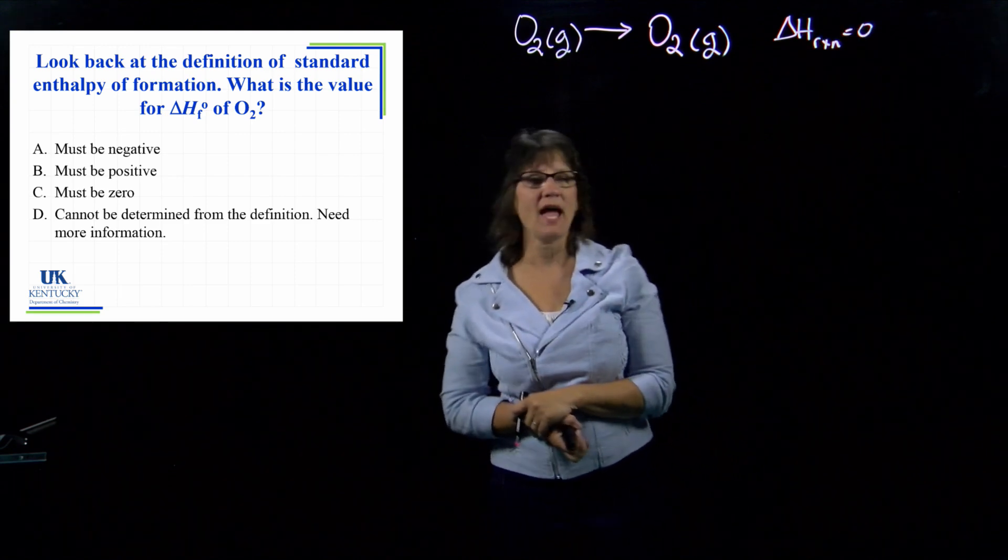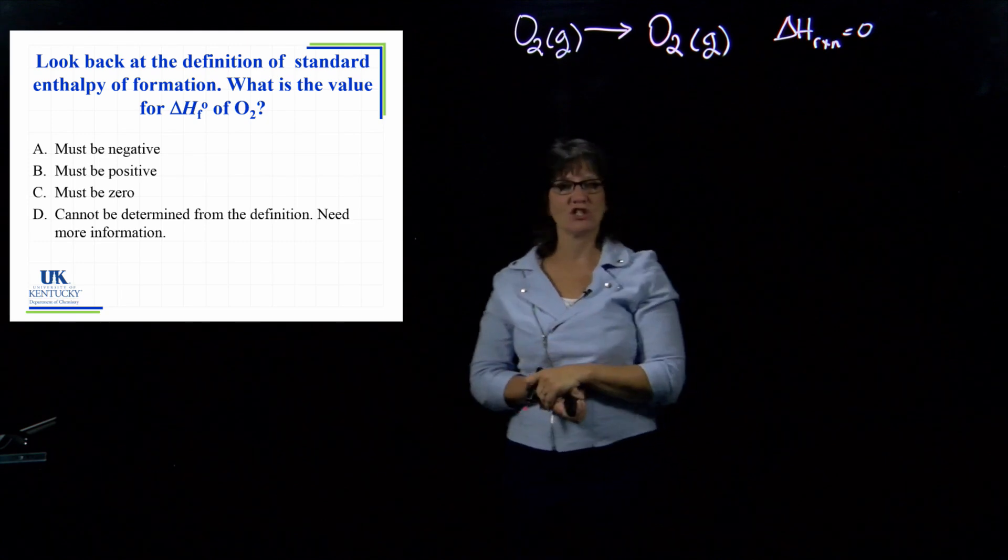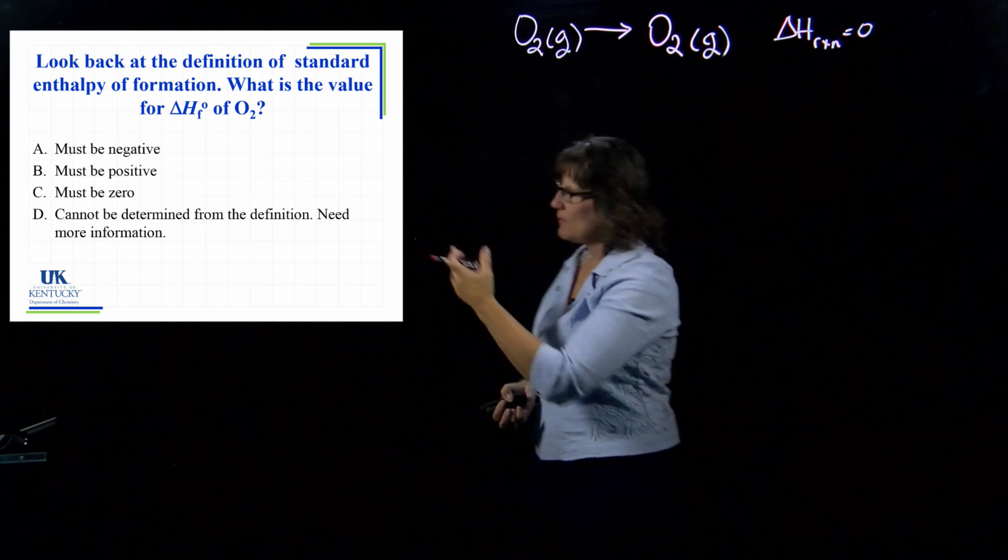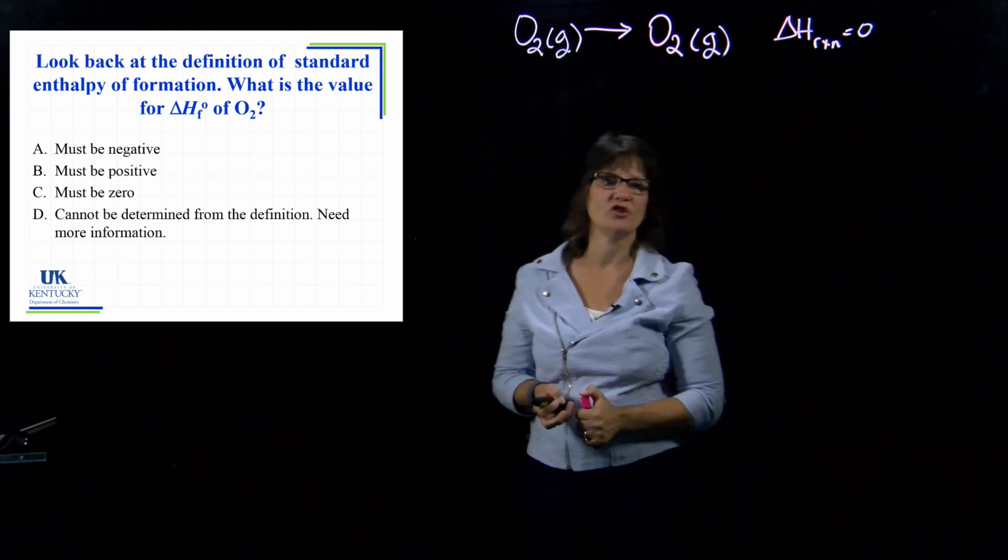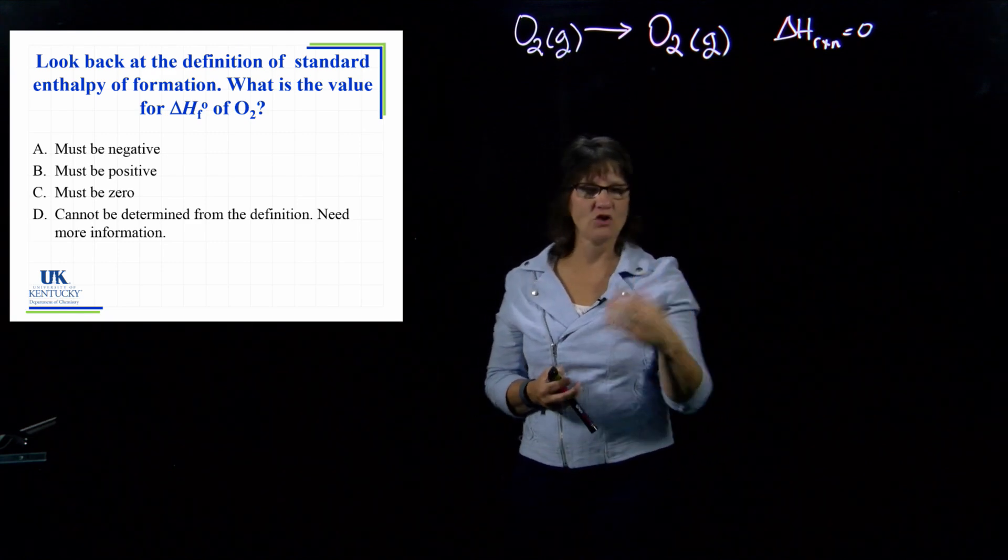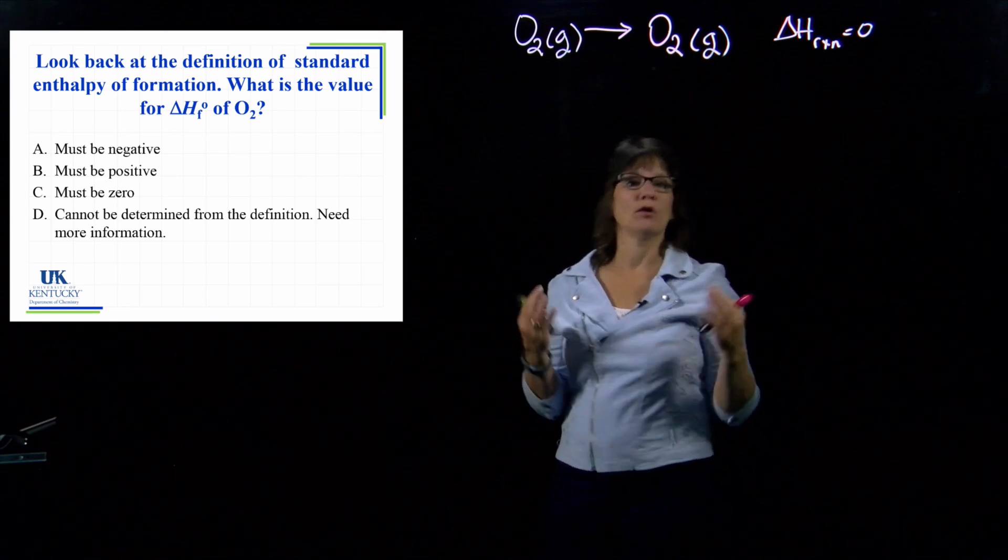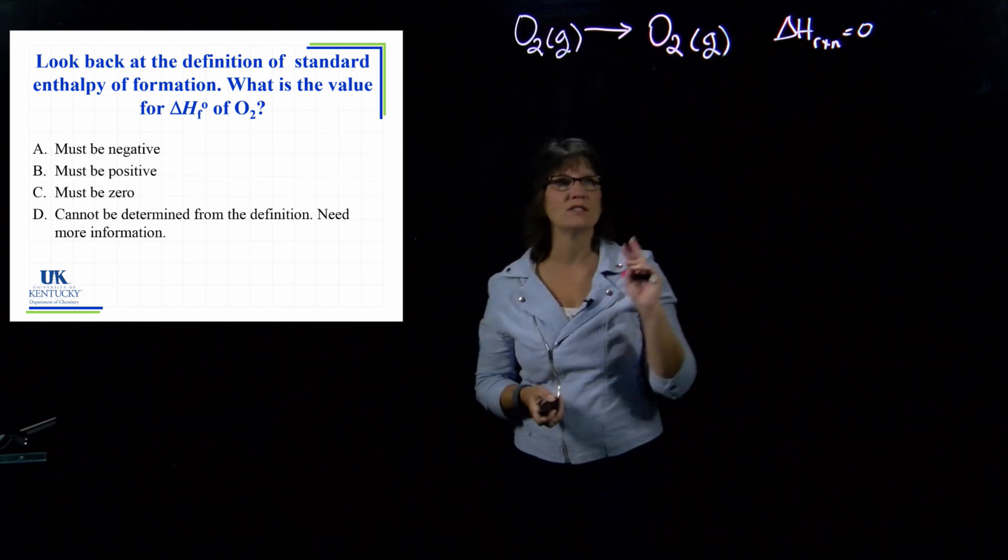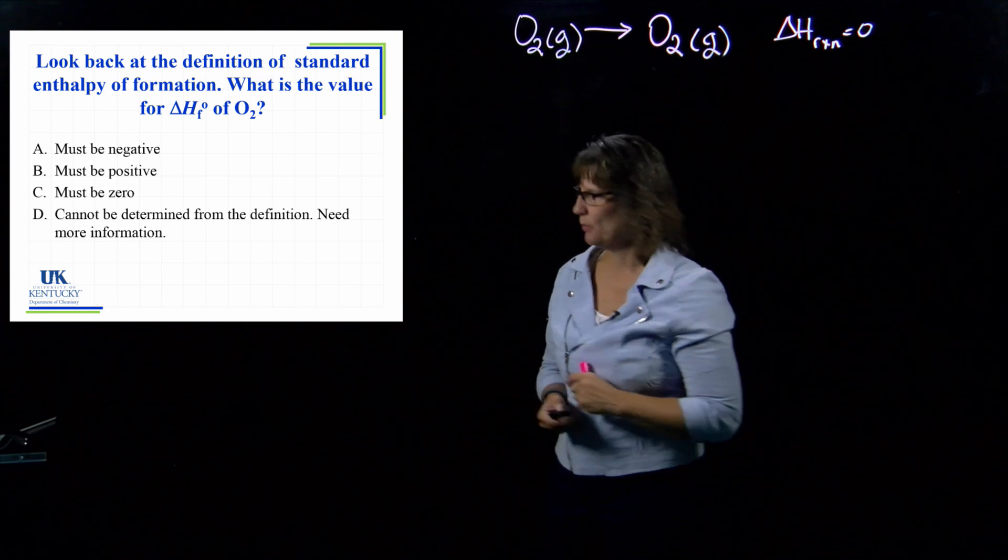And if the delta H of this reaction is zero, and that reaction is a formation reaction, then that means the delta H of formation of oxygen, elemental oxygen O2, is zero. Now, I expect you to know that for any other elemental forms. In its most stable form, the delta H of formation will be zero.